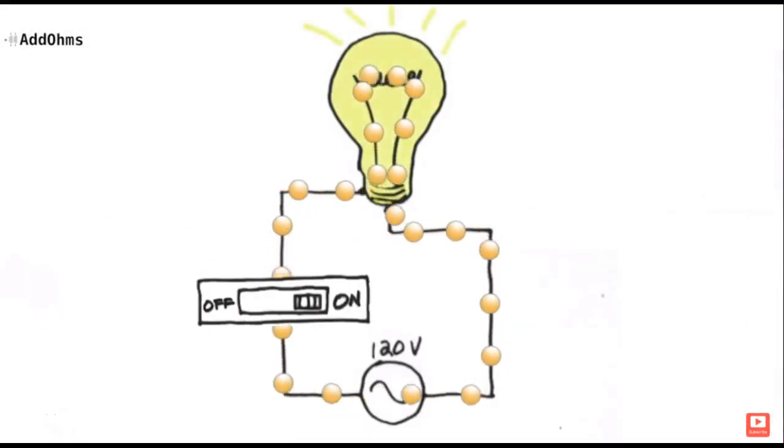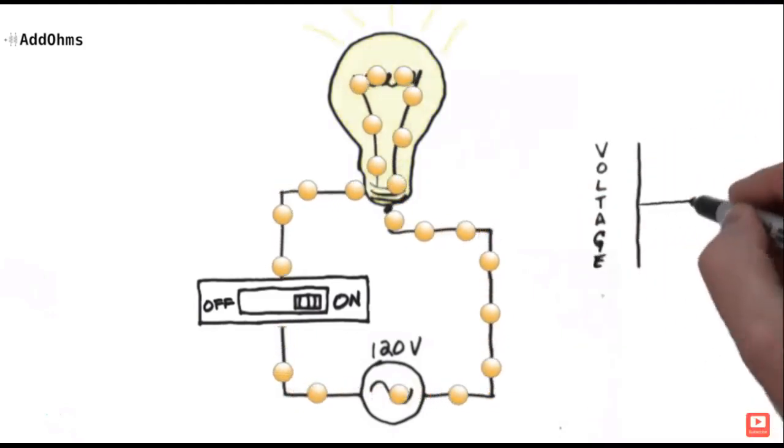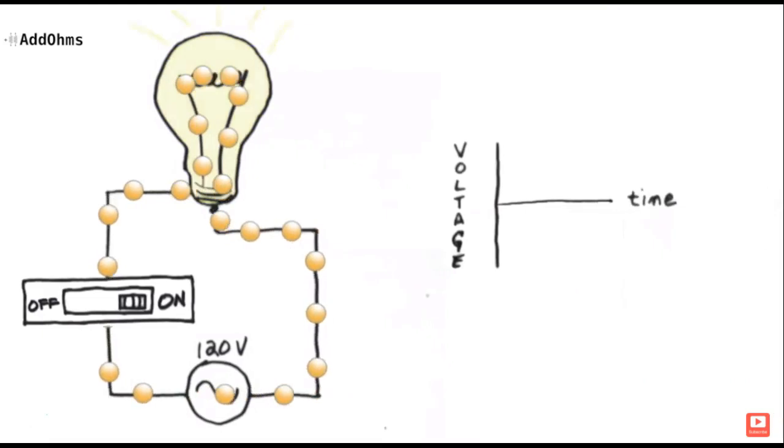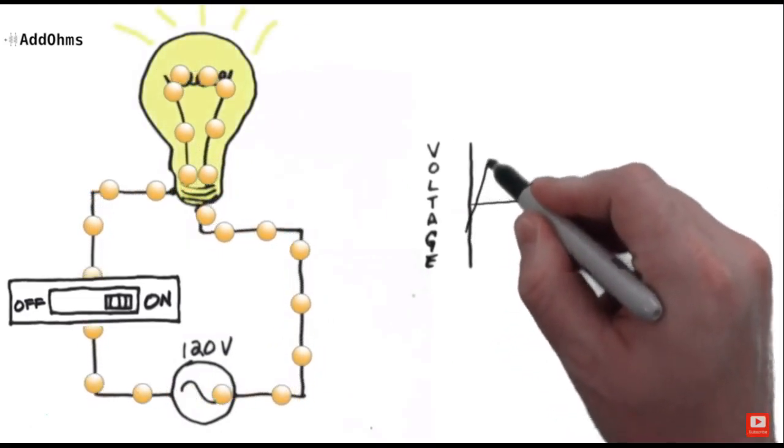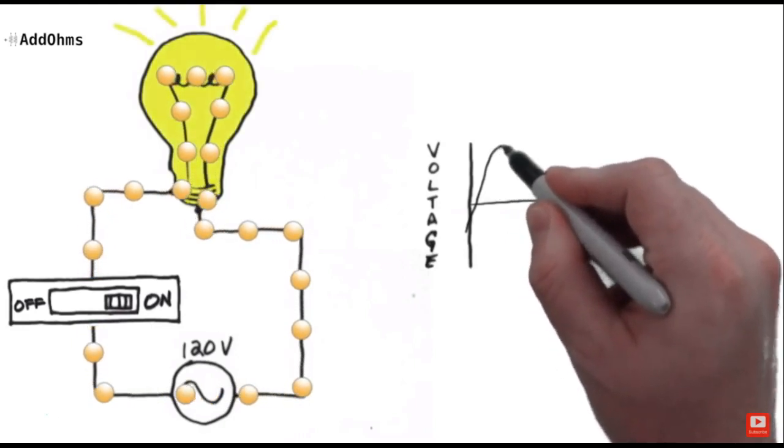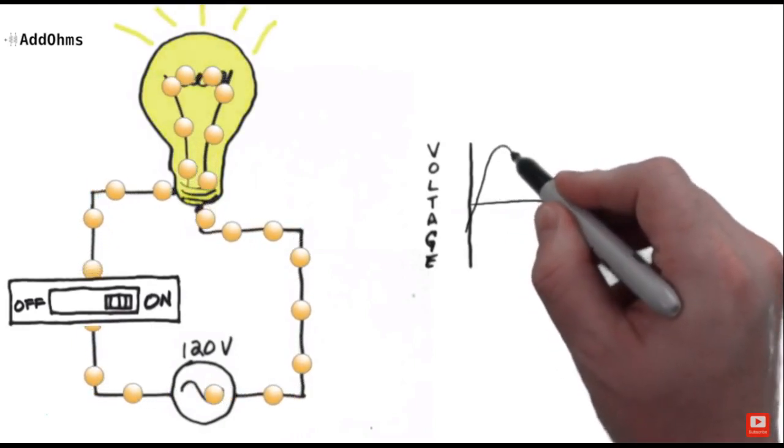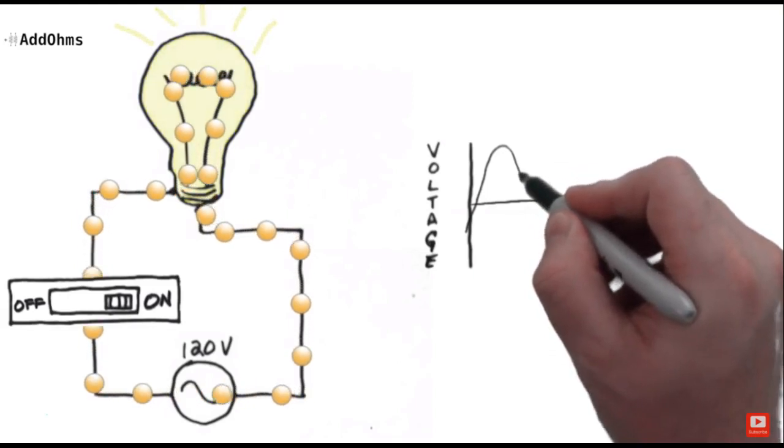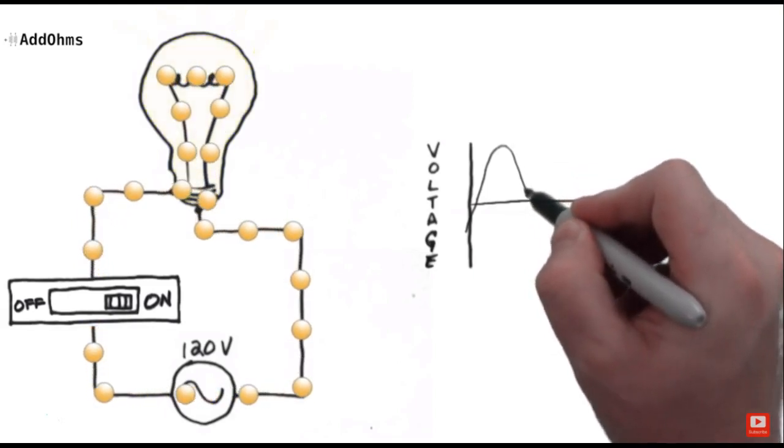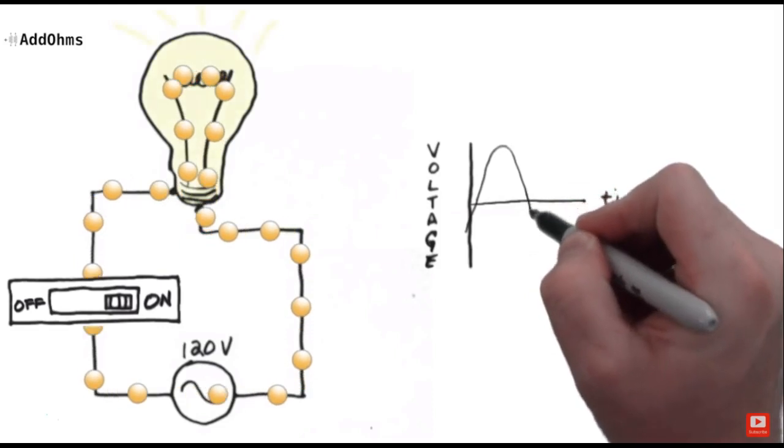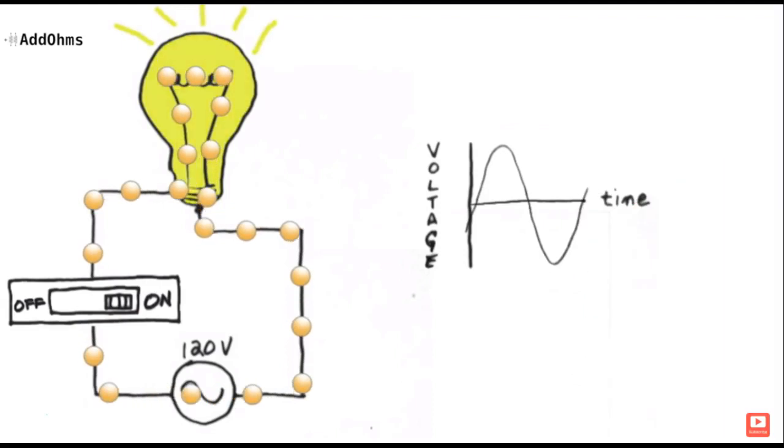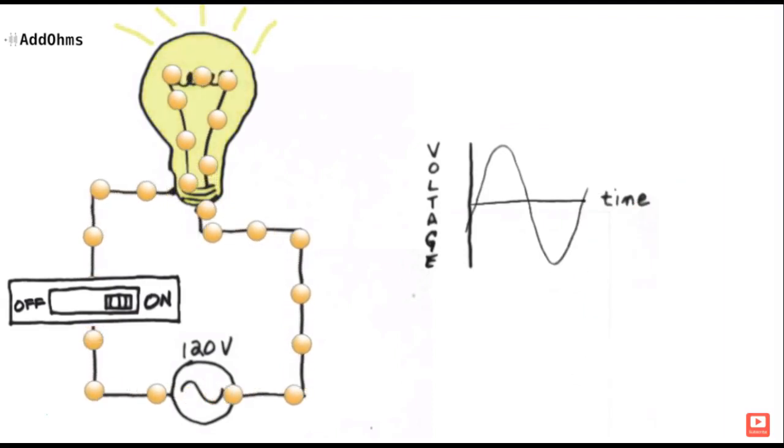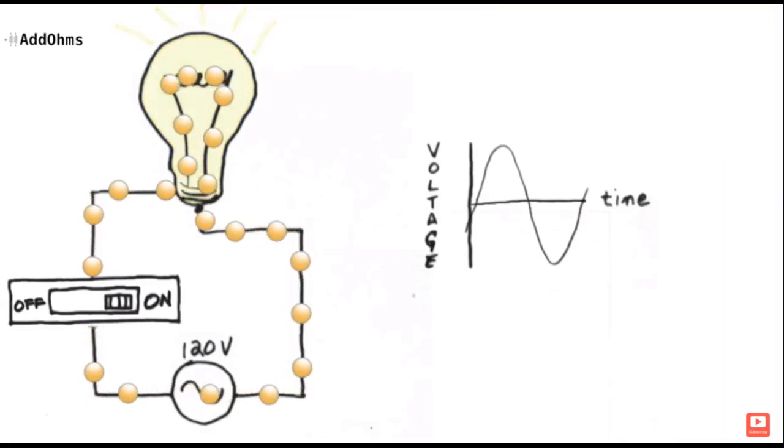Notice how the circuit behaves when we turn the switch on. Let's break down what we're seeing using the voltage graph. The current flows in one direction, and as voltage increases, the light bulb gets brighter. Once voltage reaches its peak, current flow stays the same but voltage begins to drop and the bulb gets dimmer. Once we reach zero volts, the voltage polarity changes, causing current to flow in the opposite direction.